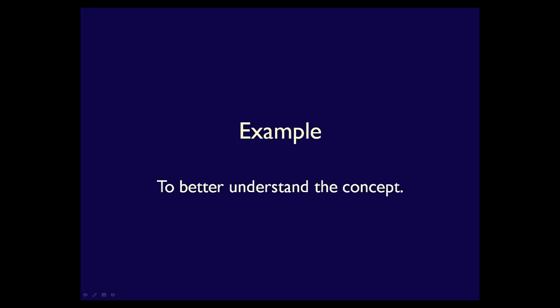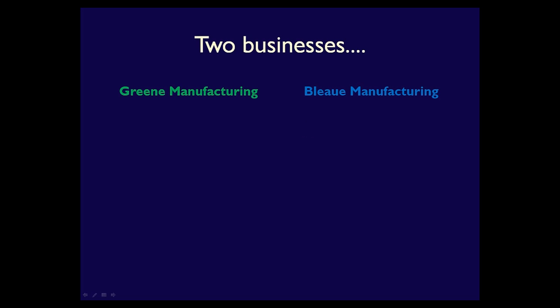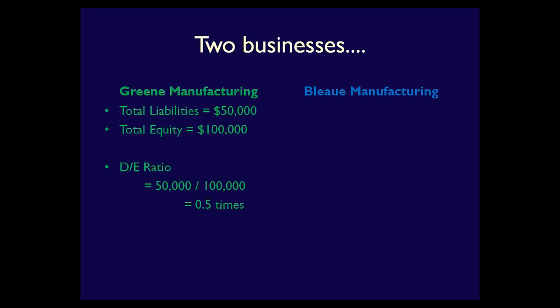Let's do an example to better demonstrate these concepts. For these examples, we'll assume that total liabilities is the total of all current and non-current liabilities. Here we have two businesses: green manufacturing and blue manufacturing. Green manufacturing has total liabilities of $50,000 and total equity of $100,000. Using these figures, we can calculate the debt-to-equity ratio, which would be 0.5 times, or 50%, calculated as 50,000 divided by 100,000.